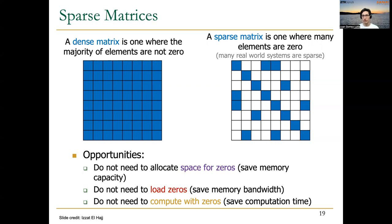That's what happens in a sparse matrix vector multiplication — it doesn't make sense to multiply by zero because we already know the result will be zero. These are opportunities, but taking advantage of them entails some challenges, because storing in a compressed format requires a more complex way of accessing the data than in a dense matrix. We are going to discuss this today, and you can learn more by watching the extended version of this lecture.